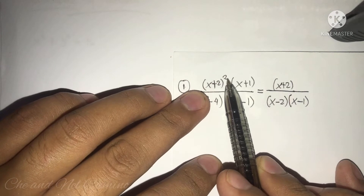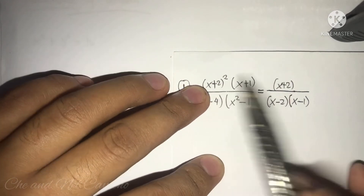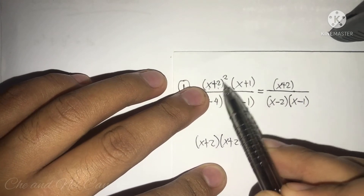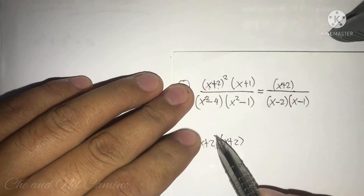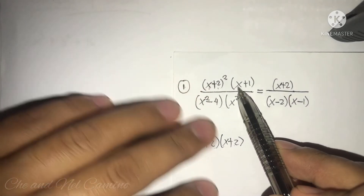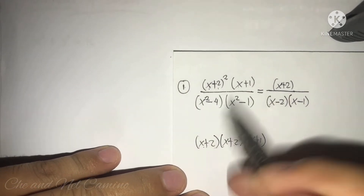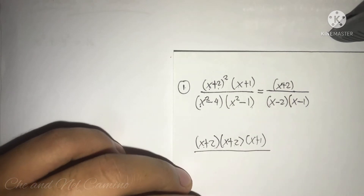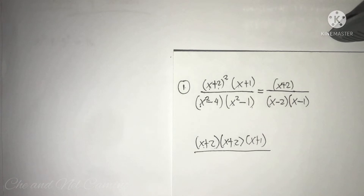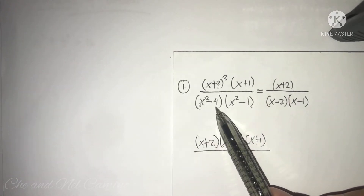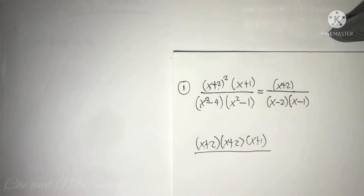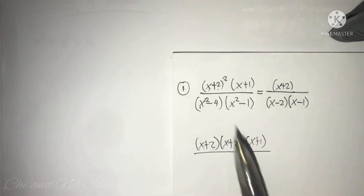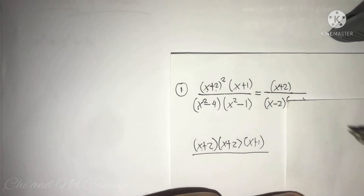So we start with the quantity of x plus 2 to the power of 2, which simply means x plus 2 times x plus 2. Then we copy x plus 1 over x squared minus 4 times the quantity of x squared minus 1. We need to find the factors of x squared minus 4 and x squared minus 1. Notice that x squared minus 4 is a difference of two squares, so we can easily find its factors.